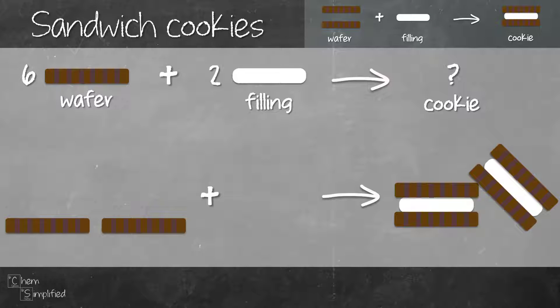So in total, we get two cookies. Now we don't have enough ingredient to make another cookie because we ran out of filling. The ingredient that we ran out first, that's called the limiting reactant. In our case, our filling is the limiting reactant. It is used up completely in the recipe.